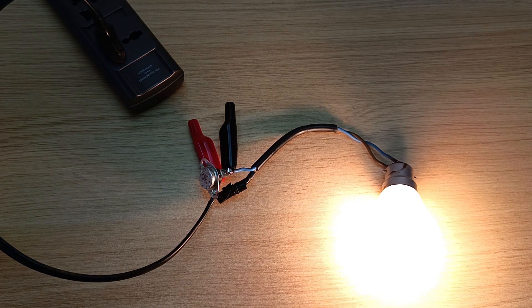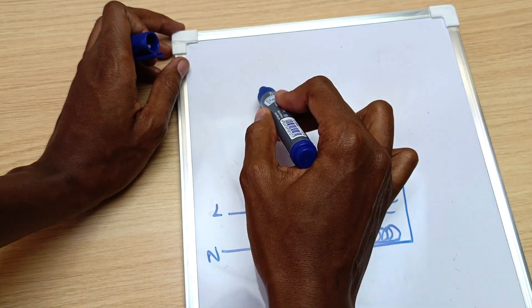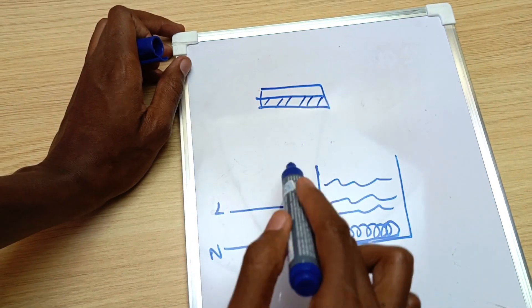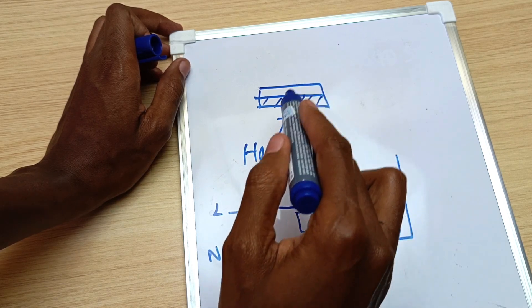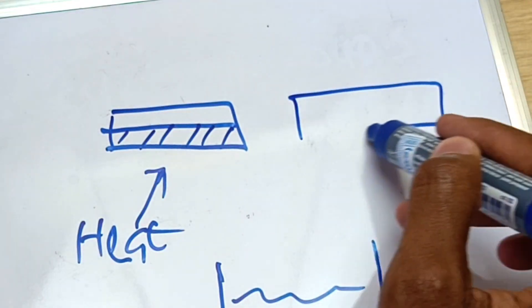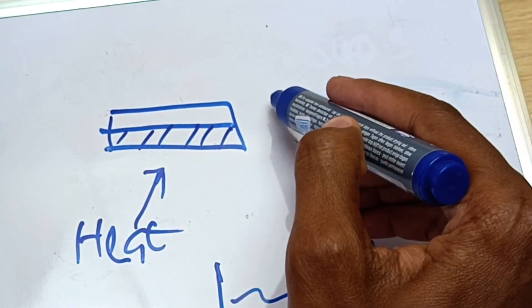Now let me show you how a bimetallic strip works, and this is from high school physics. Normally there are two types of metals, each with different characteristics, and when we apply heat, one will expand more than the other. So for example, if I apply heat to whatever I've drawn here, this is how it will react.